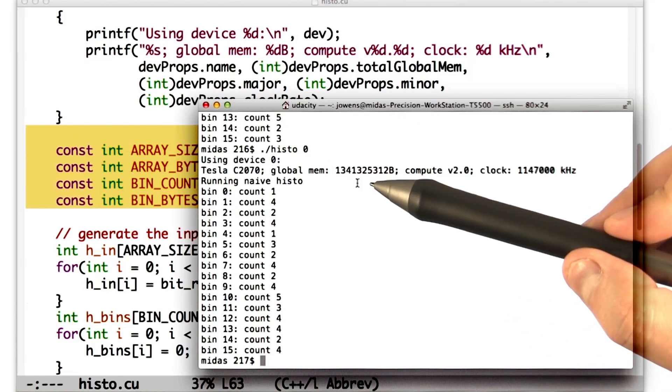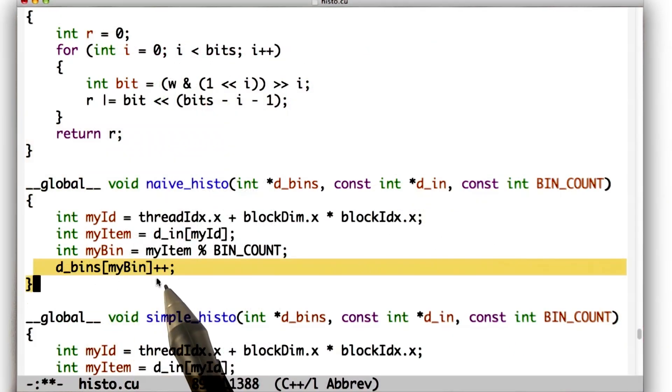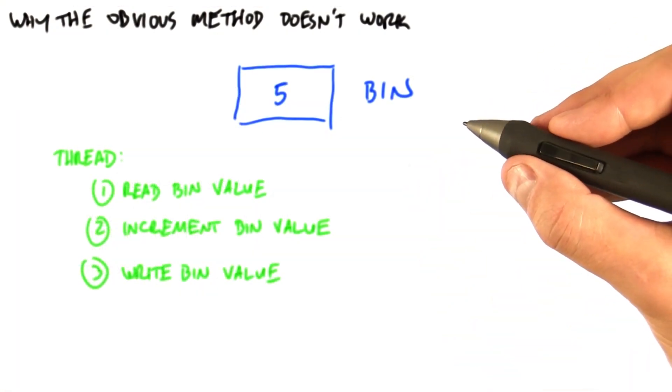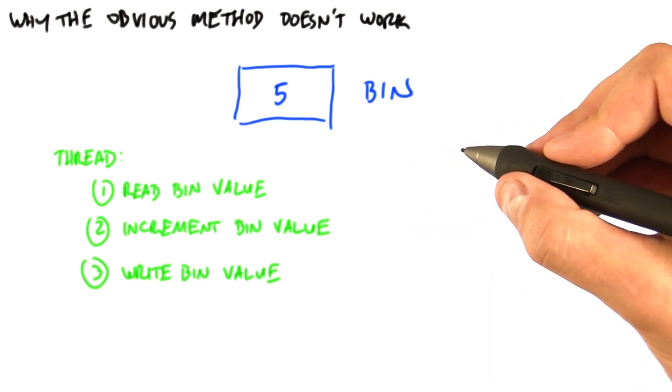Let's go back and look at the most important instruction in the kernel, the one where we increment the value in the bin. What's actually going on here? What does each thread program actually do if we implement the simple serial algorithm in parallel? It does three separate operations.